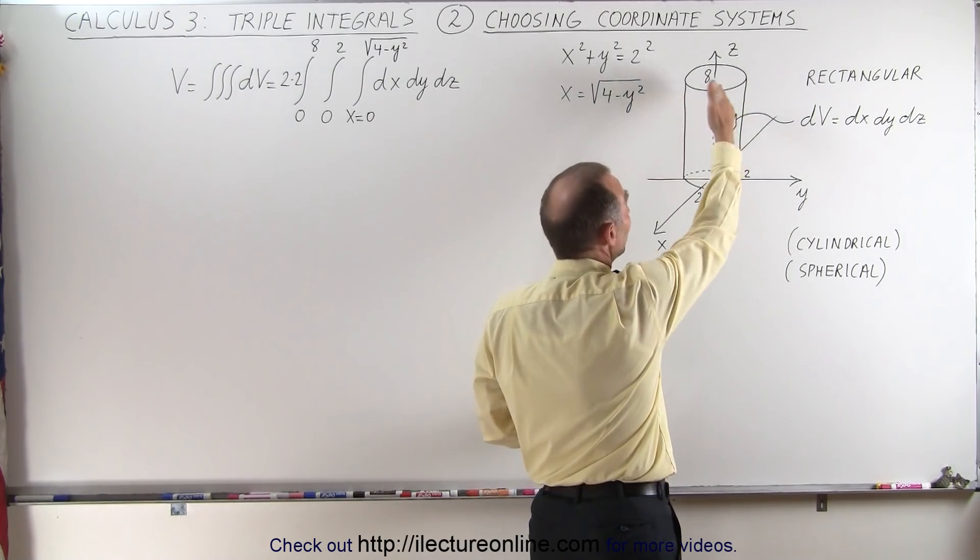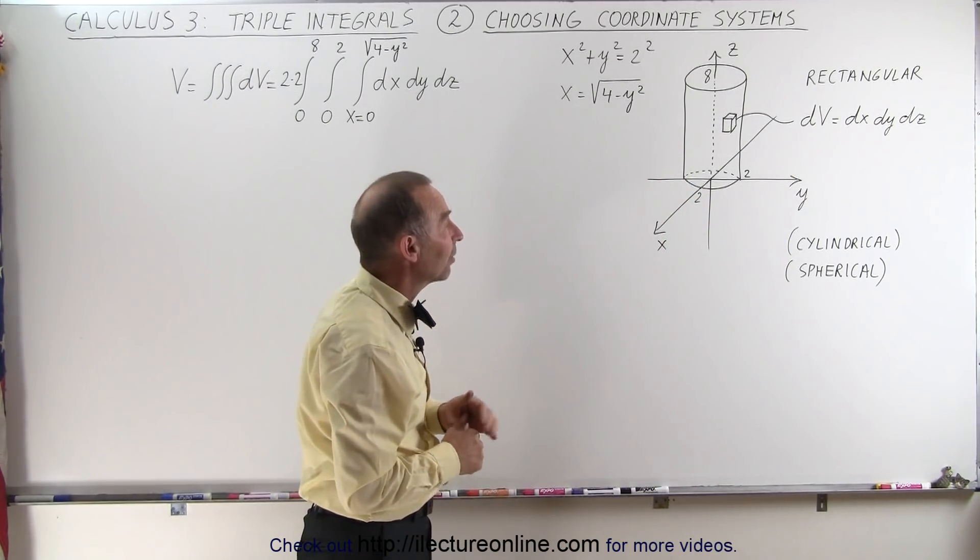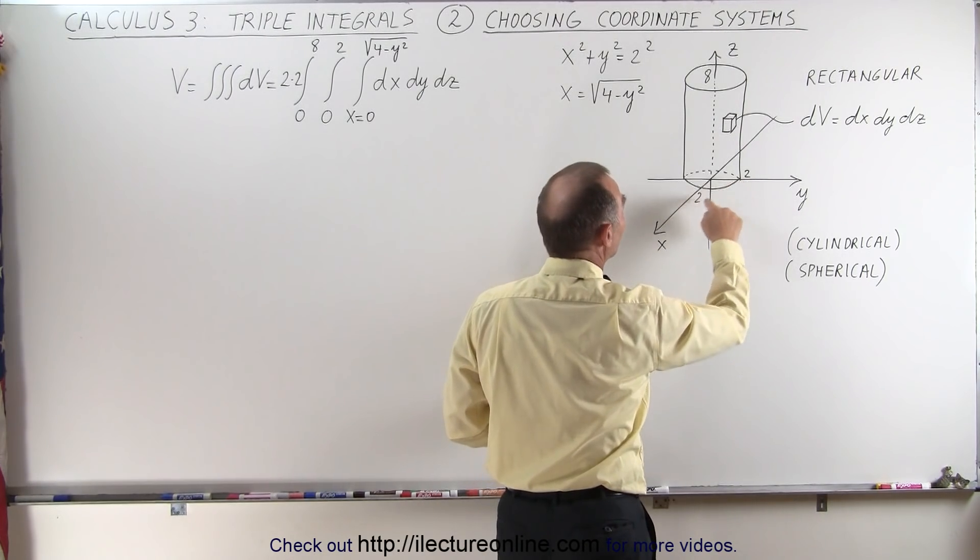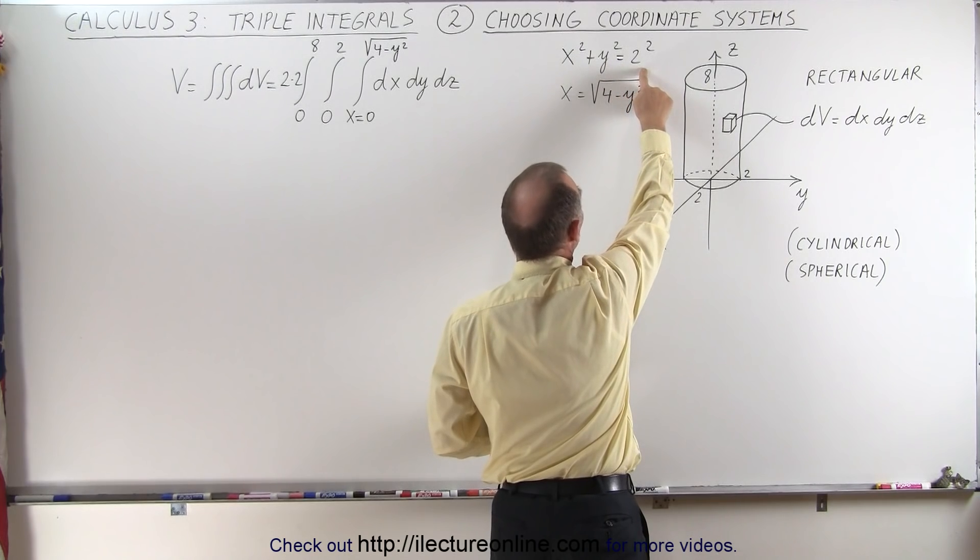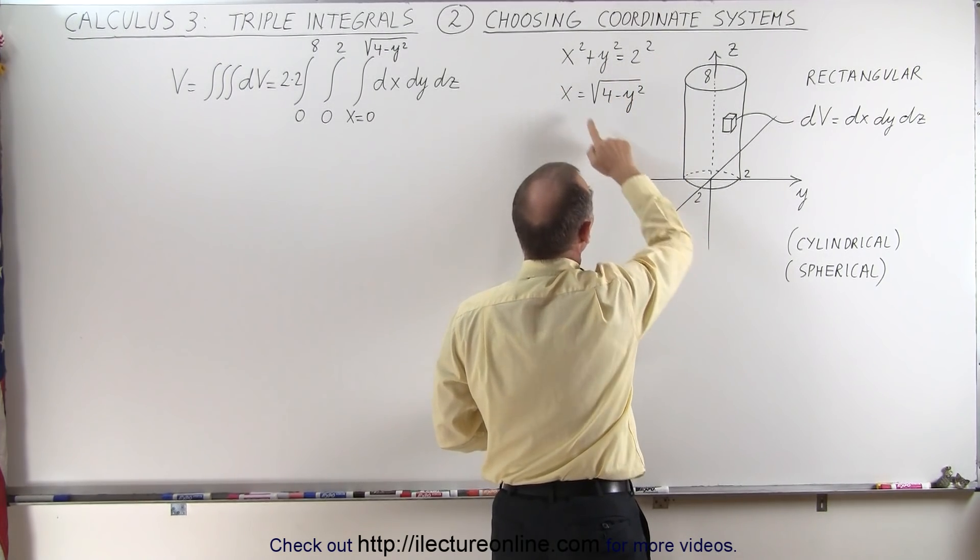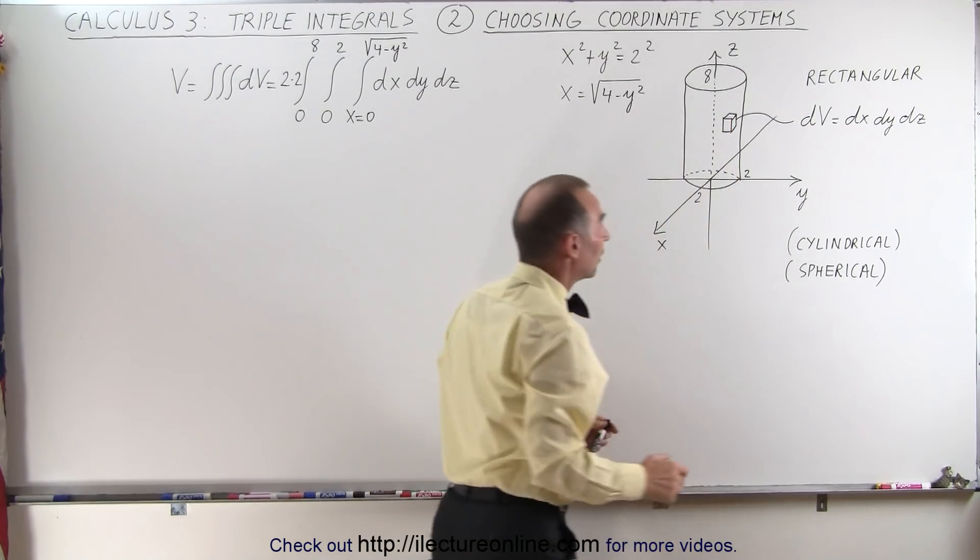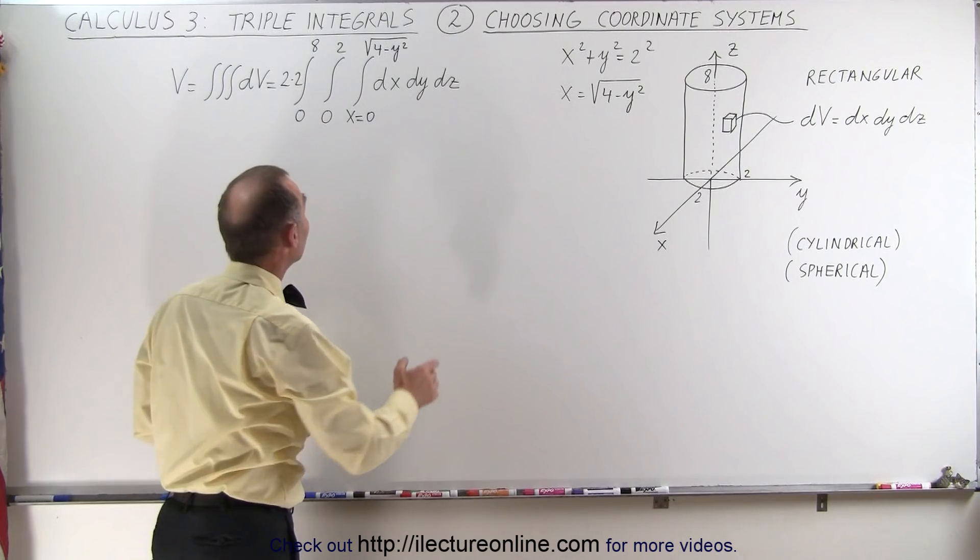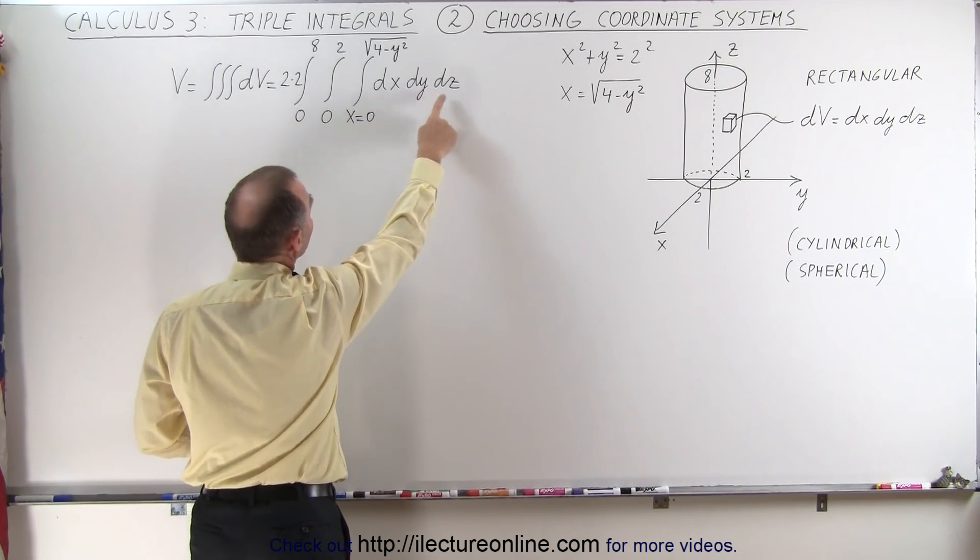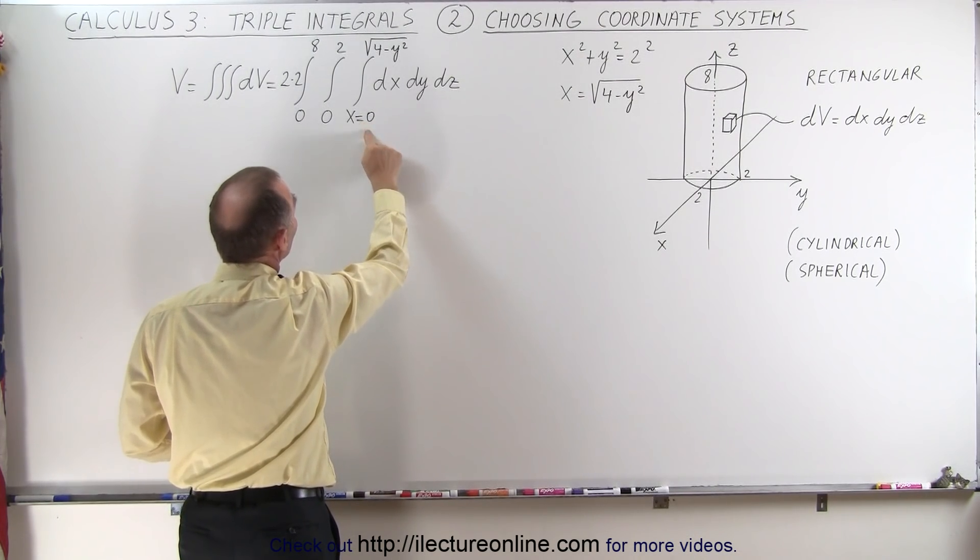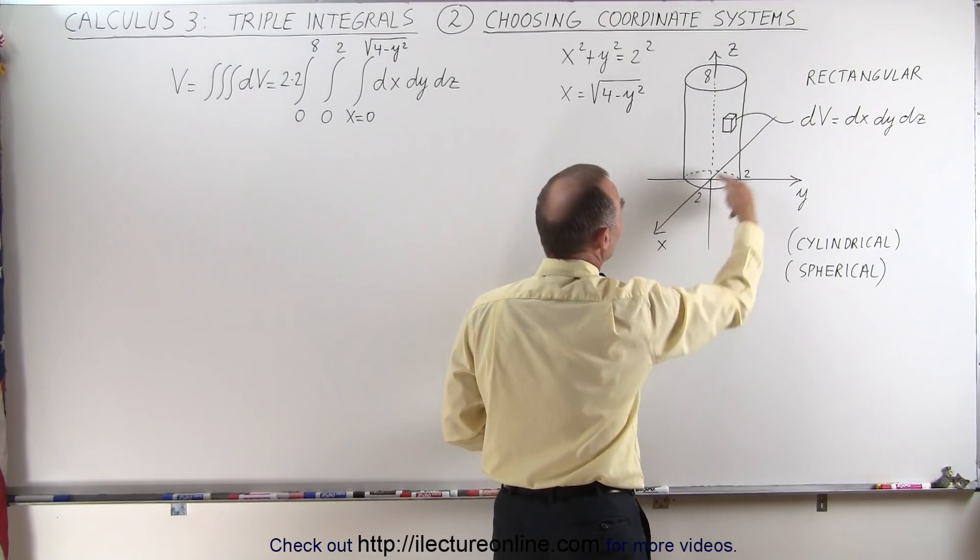We're going to find the volume of the cylinder using the rectangular coordinate system to show you that it is indeed possible. The dimensions on the base are 2 by 2. So the equation describing the base would be x² + y² = 2², or 4. And so x can be written as the square root of 4 minus y², and the height would be 8. If we're going to integrate that, we're going to use the triple integral. We're going to integrate dx first, then dy, then dz. The limits for x are going to go from 0 to the square root of 4 minus y².